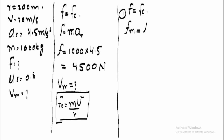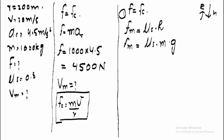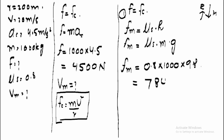The maximum force of friction is equal to mu_s multiplied by the normal reaction force of the road. Since the car is on a flat surface, the reaction force equals the weight mg. So the maximum friction force equals mu_s × m × g, which is 0.8 × 1000 × 9.8, giving us a maximum friction force of 7840 Newtons.